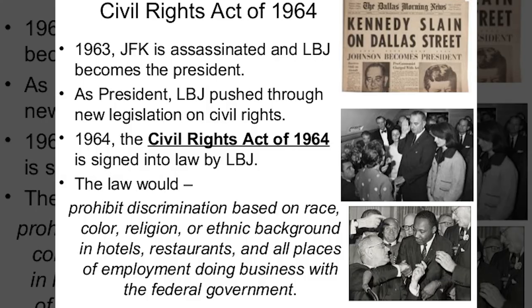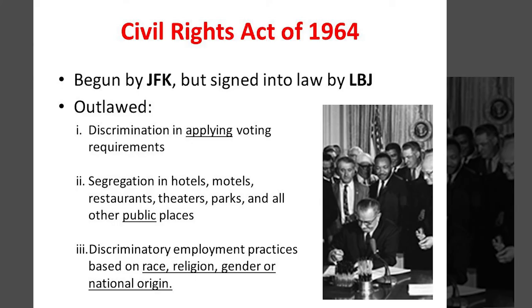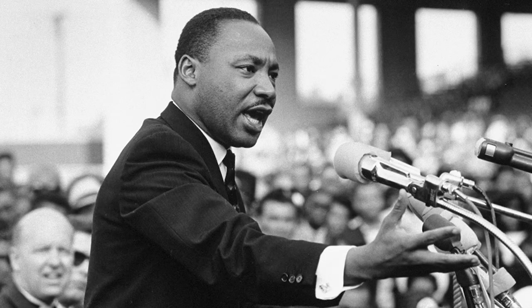Under the Civil Rights Act of 1964, segregation on the grounds of race, religion, or national origin was banned at all places of public accommodation, including courthouses, parks, restaurants, theaters, sports arenas, and hotels. No longer could Black people and other minorities be denied service simply based on the color of their skin. Civil rights leader Dr. Martin Luther King Jr. said that the Civil Rights Act of 1964 was nothing less than a second emancipation.